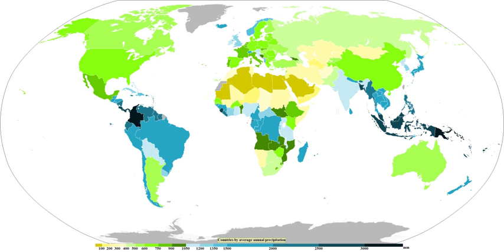Eventually, the cloud droplets will grow large enough to form raindrops and descend toward the earth, where they will freeze on contact with exposed objects. Where relatively warm water bodies are present, for example due to water evaporation from lakes, lake effect snowfall becomes a concern downwind of the warm lakes within the cold cyclonic flow around the back side of extra-tropical cyclones.